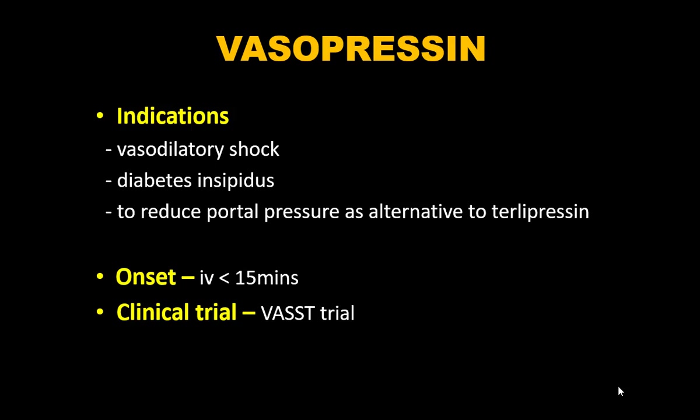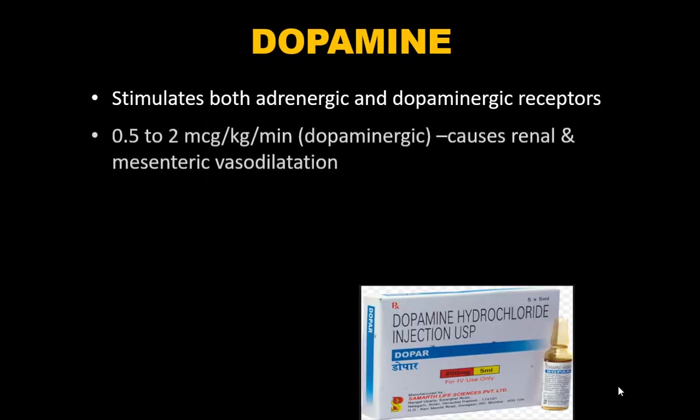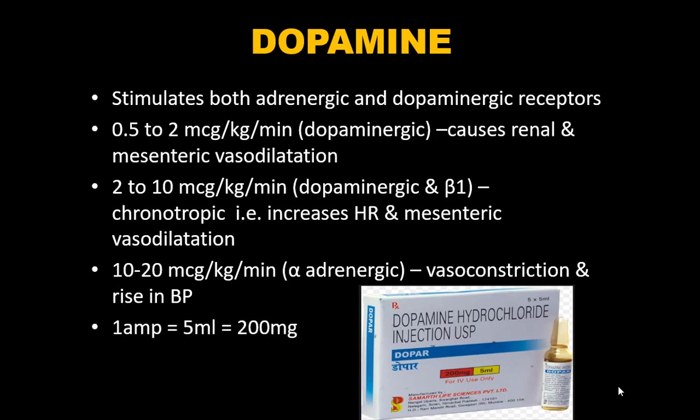Indications for vasopressin: vasodilatory shock, diabetes insipidus, and reduction of portal pressure as an alternative to terlipressin. Ideally terlipressin should be preferred. Onset is within 15 minutes. The VASST trial showed both norepinephrine and vasopressin are efficaciously equivalent — neither increases nor decreases mortality.